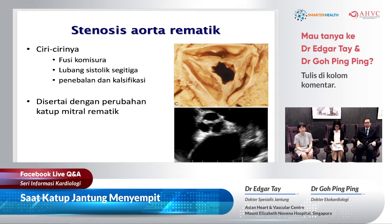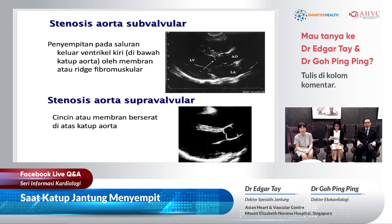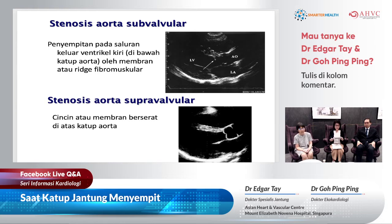Even more uncommonly, we may also see people born with abnormal structures either below the aortic valve — called sub-valvular aortic stenosis — or structures above the aortic valve — called supra-valvular aortic stenosis — which makes blood flow out of the valve narrow and behaves as though the valve itself is narrowed.